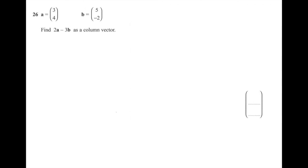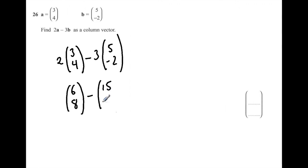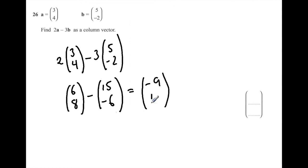Question 26. A equals (3, 4) and B equals (5, −2). Find 2A − 3B as a column vector. 2A = (6, 8). 3B = (15, −6). So 2A − 3B = (6 − 15, 8 − (−6)) = (−9, 14). Our answer is (−9, 14).